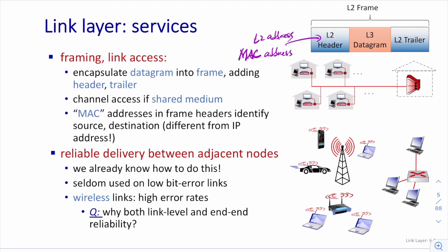Each interface card has a MAC address in the frame header to identify the source and destination interface cards. Reliability is another functionality that may or may not be provided by the link layer. Some layer 2 protocols — depending on the physical media — may have a very small error rate, so error detection or correction is not necessary.